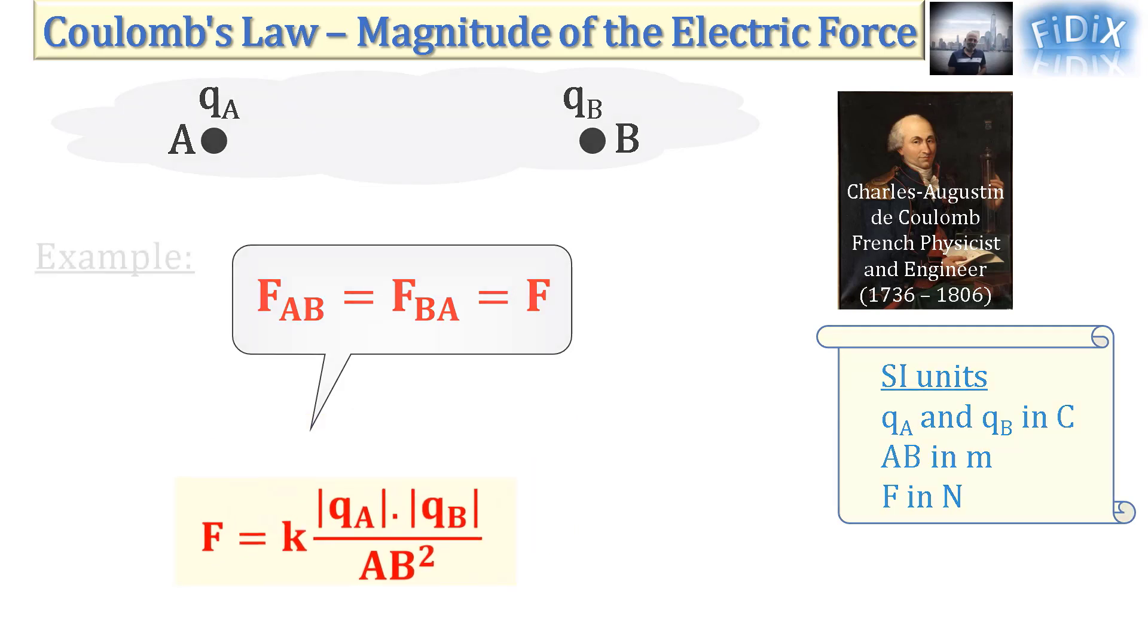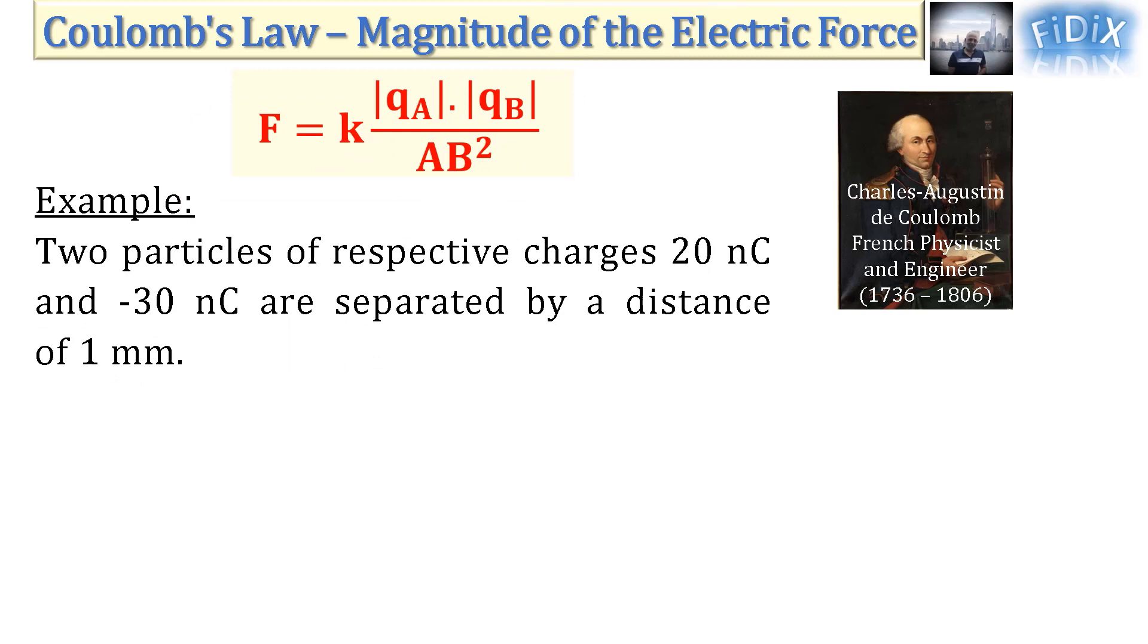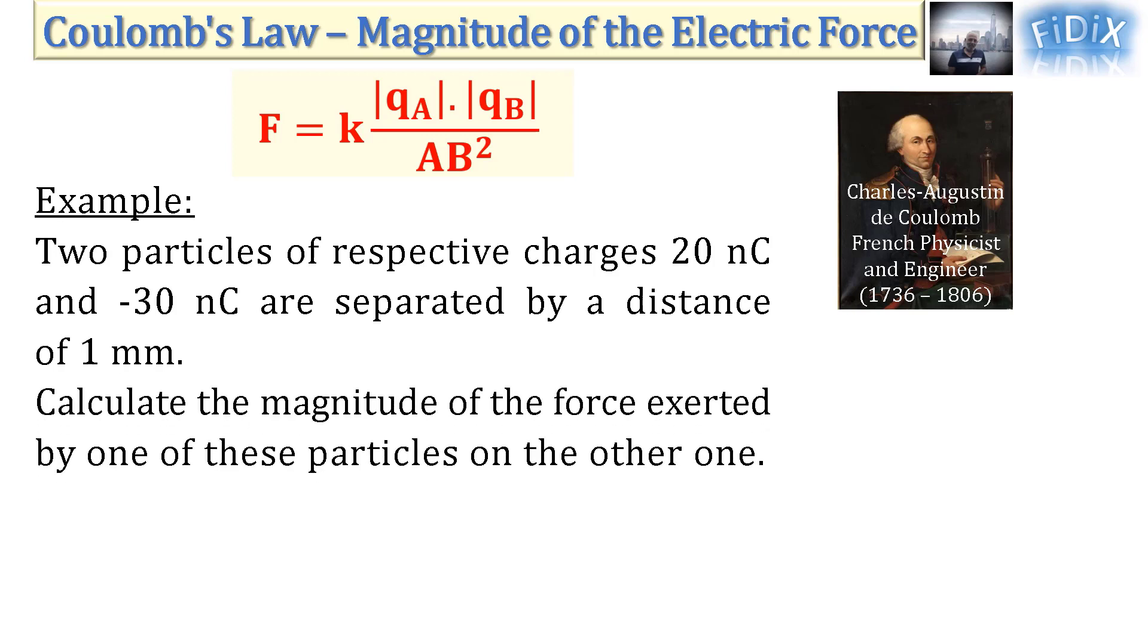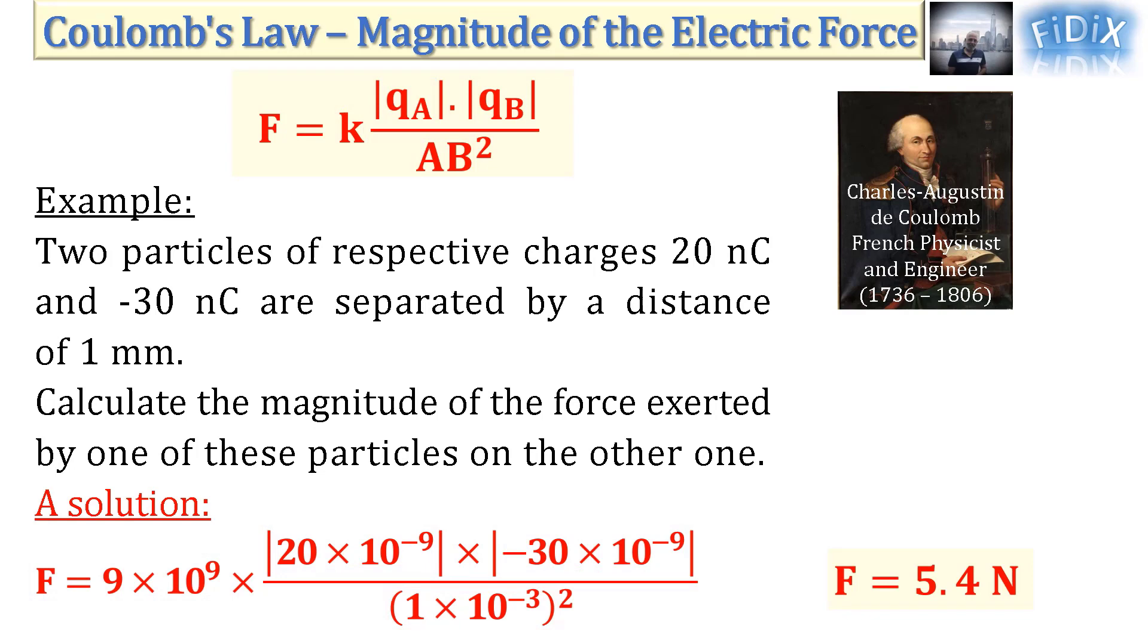Example: Two particles of respective charges 20 nanocoulombs and minus 30 nanocoulombs are separated by a distance of one millimeter. Calculate the magnitude of the force exerted by one of these particles on the other one. By applying the formula, we get F equals 5.4 newtons. And this is all for this video, thank you for watching.